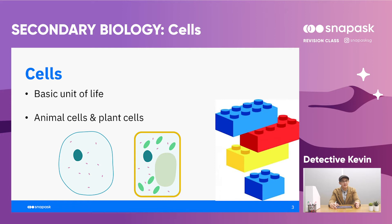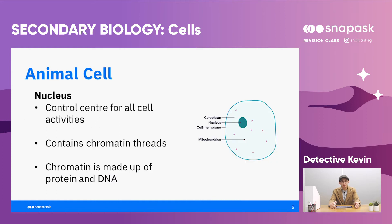Cells are the basic units of life. In the nucleus, it is a control centre where all cell activities take place. Cell activities include cell growth as well as cell division. The nucleus also contains chromatin thread which later become chromosomes during cell division. Chromatin is made up of protein and DNA.